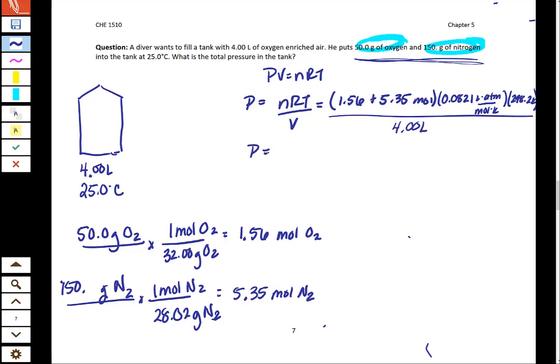So when you go through all of that you should get an answer of 42.3 atmospheres as your total pressure. So again this was one way to solve the problem. We can talk in class about the other way to solve the problem. Personally I think the other way takes a little bit more work.